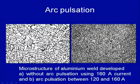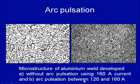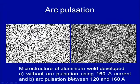A typical photograph shows the effect of arc pulsation. The microstructure of a weld developed using conventional continuous arc welding with 160 A DC current shows a coarser grain structure. When pulsing is done between 120 and 160 A with pulse arc welding, the grain structure is refined significantly. This refinement is attributed to the somewhat higher cooling rate experienced by the weld zone compared to the conventional arc welding process.